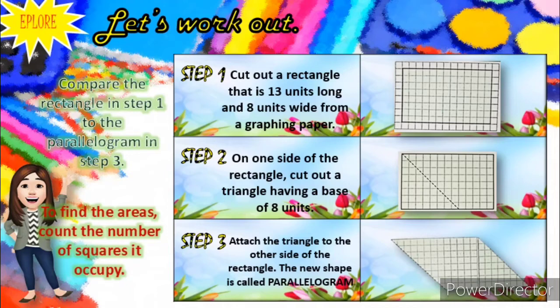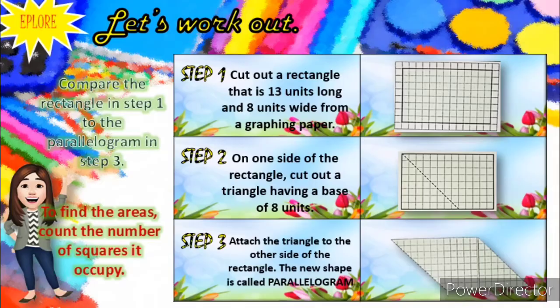Compare the rectangle in step 1 to the parallelogram in step 3. In step 1, we can see that it is only a rectangle. But when the experiment is done, in step 3, the rectangle becomes a parallelogram. Therefore, it shows us that a parallelogram is also part of a rectangle. To find the areas, count the number of squares it occupies. Since parallelogram is part of the rectangle, the area of a rectangle is equivalent to the area of a parallelogram. On the next slide, I will show you how to get the area of a certain polygon, specifically a parallelogram.